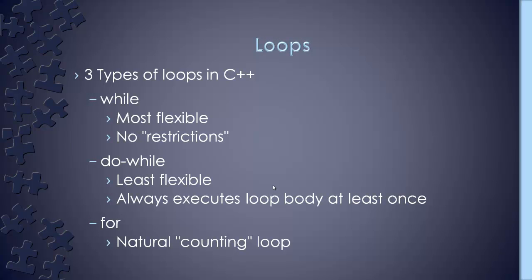Now let's talk about loops. Loops are very common in C++ and there are three types: while, do-while, and for. While is the most flexible with no restrictions. Do-while is the least flexible — the problem with do-while is it always executes the loop body at least once, even if the condition was never met. For is our natural counting loop and you'll see it used a lot, especially in our labs.